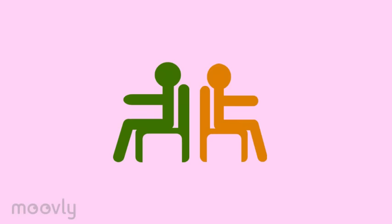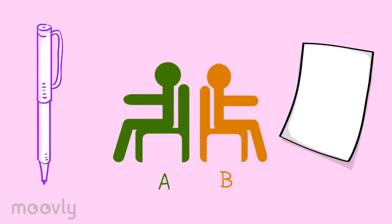Each pair takes two chairs, puts the backs against each other, and sits down. Each pair receives a piece of paper and a pen. The duos decide who is person A and who is person B.